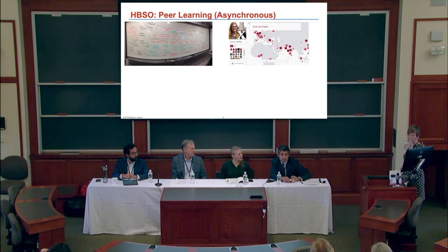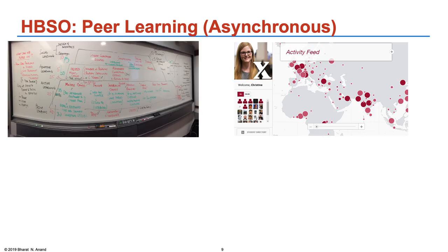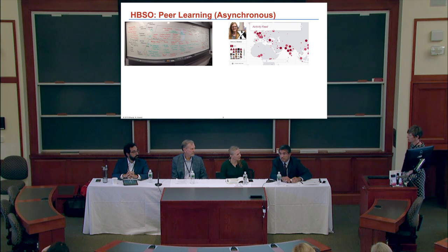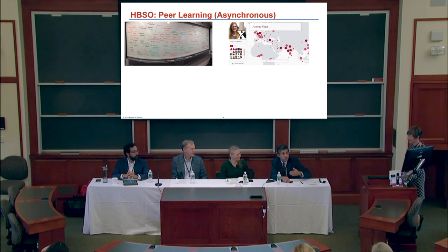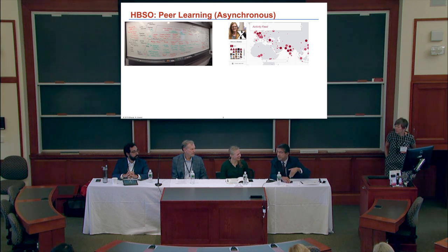We basically pivoted the entire effort to focus on social learning. The first page of the HBS Online platform has no content — just a global map with pulsating bubbles showing who's online in which city. If you click on a bubble, it shows people's profile pictures and you can message them. On the first day we launched, 300 people logged in and there were 13,000 profile views. All they wanted to do was check each other out. Familiarity is almost a precondition for conversation.